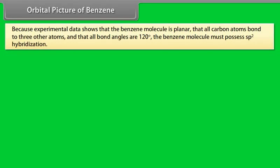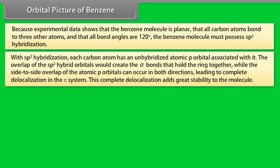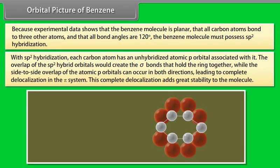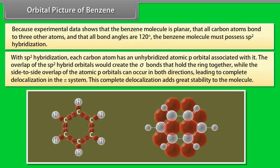Orbital picture of benzene. Because experimental data shows that the benzene molecule is planar, that all carbon atoms bond to three other atoms, and that all bond angles are 120 degrees, the benzene molecule must possess sp2 hybridization. With sp2 hybridization, each carbon atom has an unhybridized atomic p orbital associated with it. The overlap of the sp2 hybrid orbitals would create the sigma bonds that hold the ring together, while the side-to-side overlap of the atomic p orbitals can occur in both directions, leading to complete delocalization in the pi system. This complete delocalization adds great stability to the molecule.